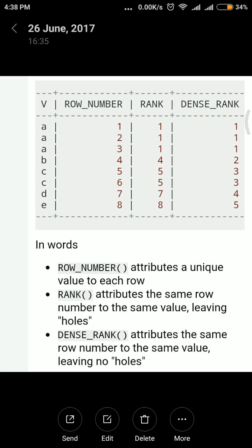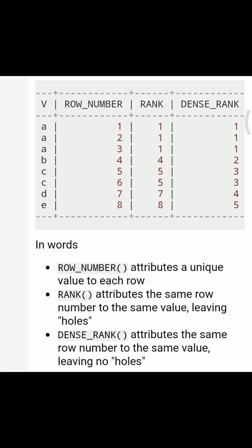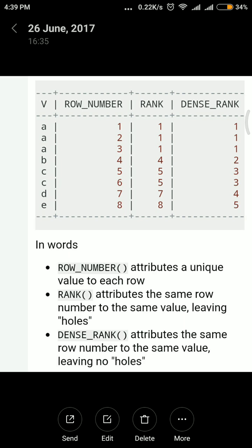For 'b' it will not give 2 or 3, it will give sequence number 4 because this 4 is located in the fourth row. If you see the value after the fourth row in the V column, that is 'c'. The value has changed in the V column, so the sequence number will also be increased. After 4 comes 5. If 'b' is repeating again, 4 will repeat again. This is how it will happen.